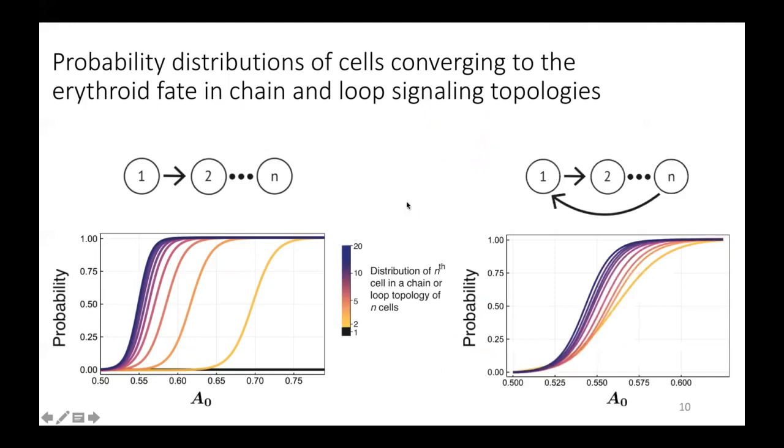And so these are just two very simple examples. They show a chain of cells versus a loop of cells. And what we see in these approximate distributions is that not only does cell position in the signaling topology influence its distribution of fates, but also the number of cells in the signaling topology.